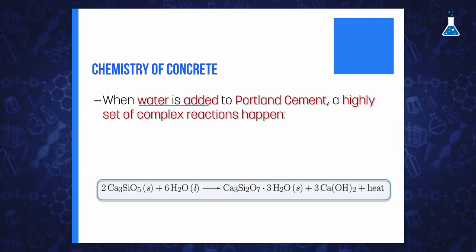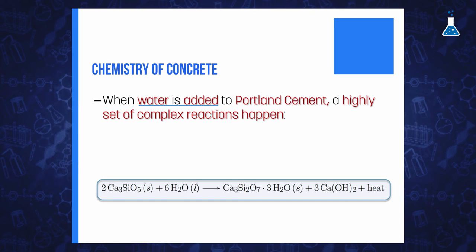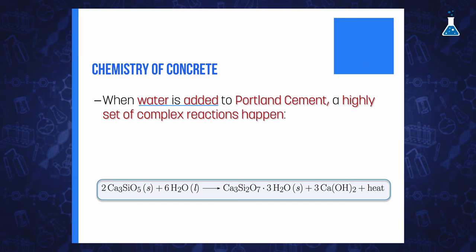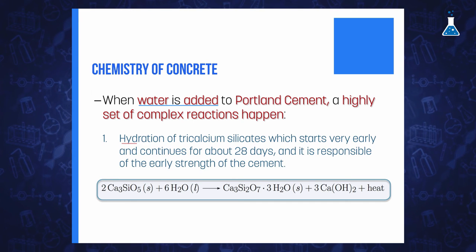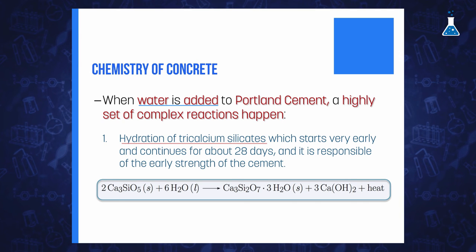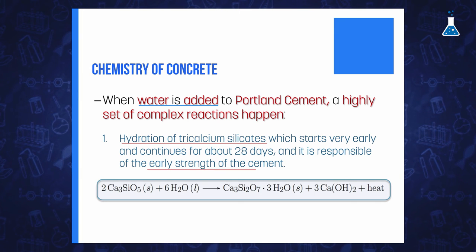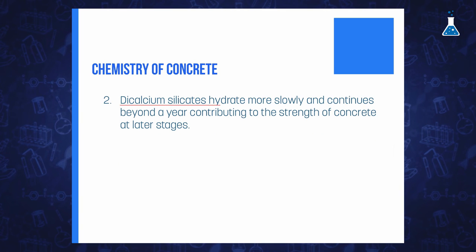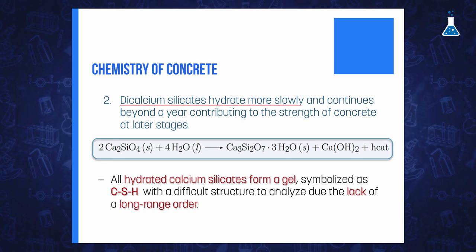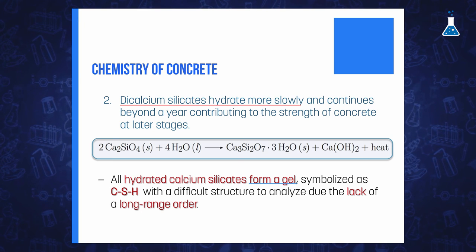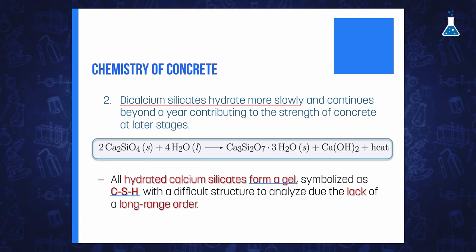When water is added to cement, a highly complex set of hydration reactions occurs. The dominant compounds of Portland cement — dicalcium and tricalcium silicates — react with water to form hydrated calcium silicates, which are chiefly responsible for the strength of concrete. The hydration of tricalcium silicate happens very early and continues for about 28 days at a steady rate, contributing to early strength. Dicalcium silicate hydrates more slowly, continuing beyond a year, contributing to later-stage strength. All calcium silicate hydrates form a gel, symbolized as C-S-H, whose structure is difficult to analyze due to the lack of long-range order.